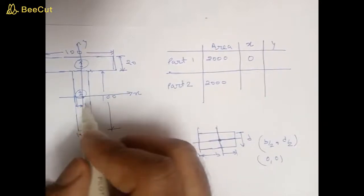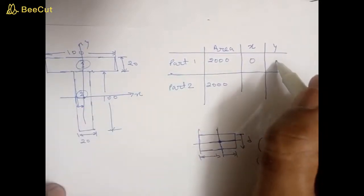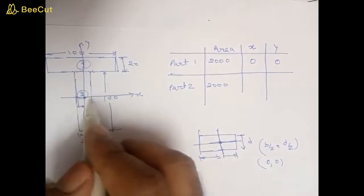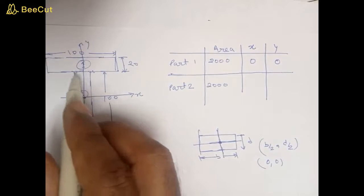And y-coordinates of the centroid also will be zero. You can see from here it is in middle of the section, so x and y both will be zero because it is symmetrical about x-axis, and section two is also symmetrical about y-axis.